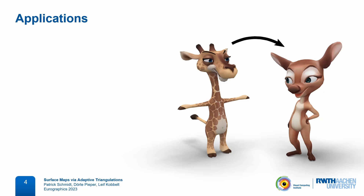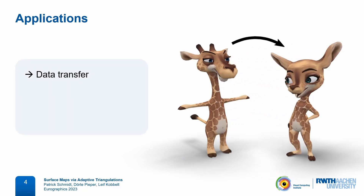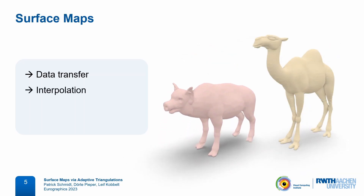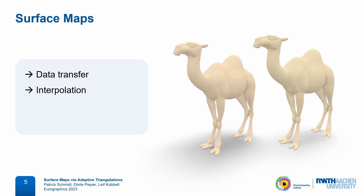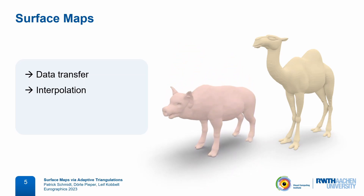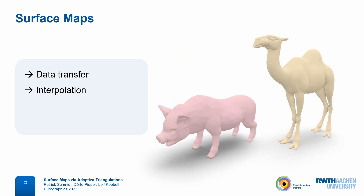In a lot of different scenarios, we need maps that bring the surfaces of 3D objects into correspondence. For example, to transfer information such as textures, weights, or other surface data. Or if we want to interpolate between models, we need a map that tells us which point on one surface to blend towards which point on the other surface.